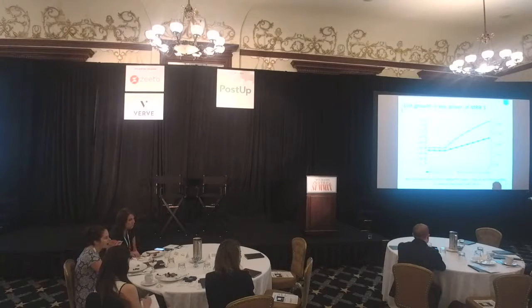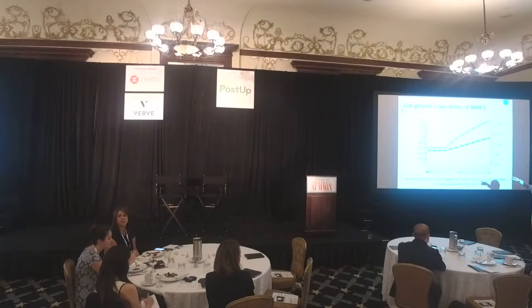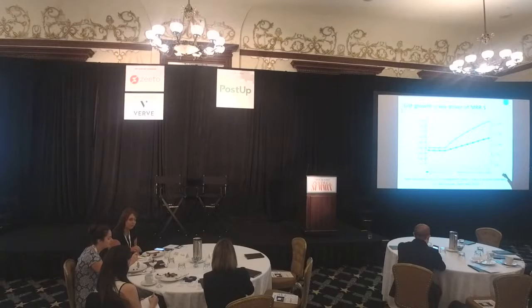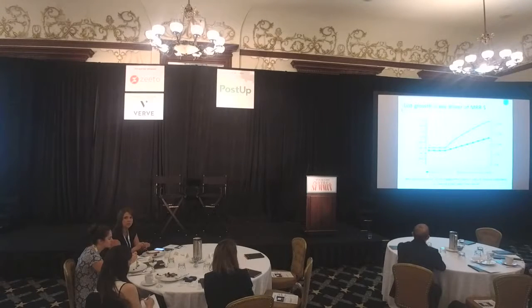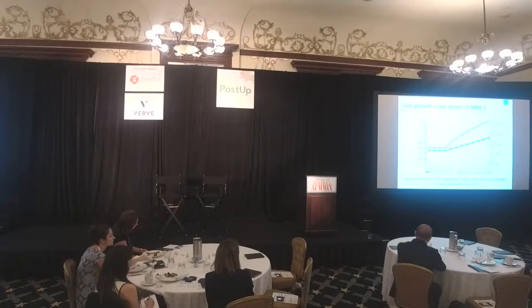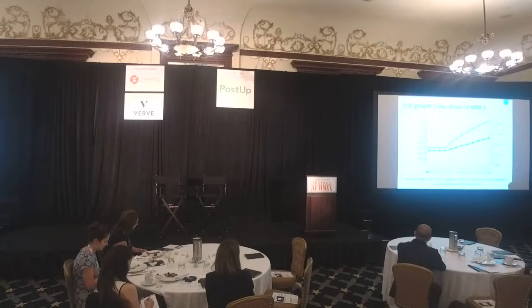Another reason to like list growth is that your revenue actually grows faster. This blue line shows a linear increase in the size of your list, while the green line — revenue — actually grows faster, because new subscribers, people that have just joined your list, have on average across our publishers doubled the engagement of tenured subscribers that have been there for more than a year. So even for relatively small gains in list size, it's throwing off twice as much money.